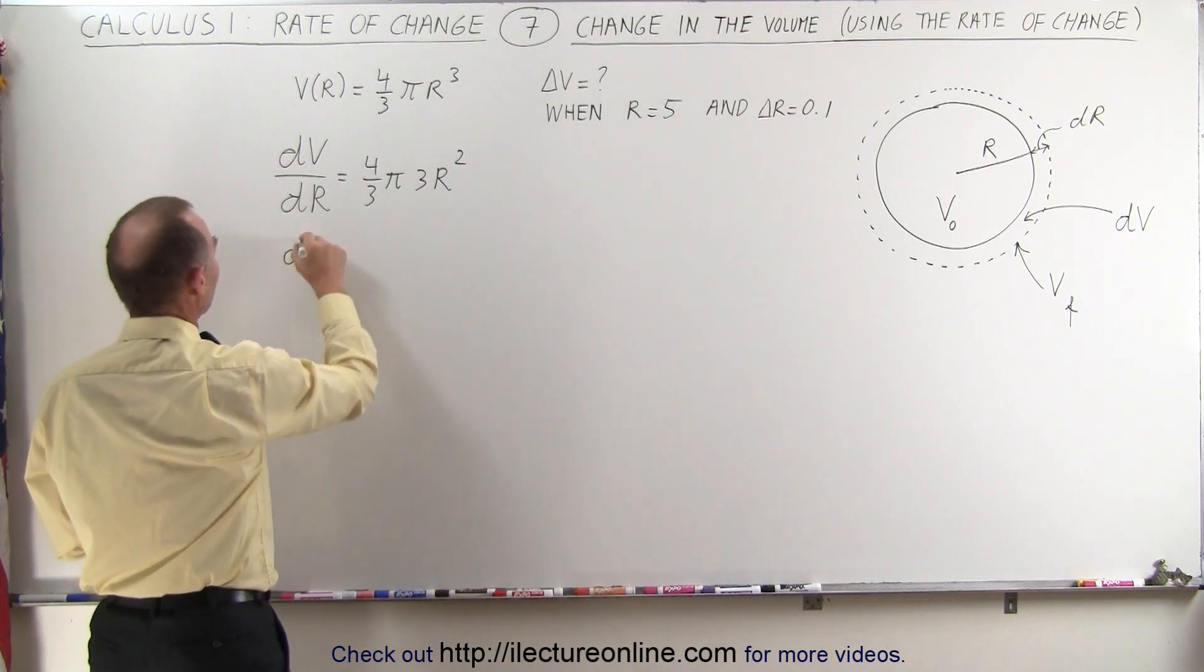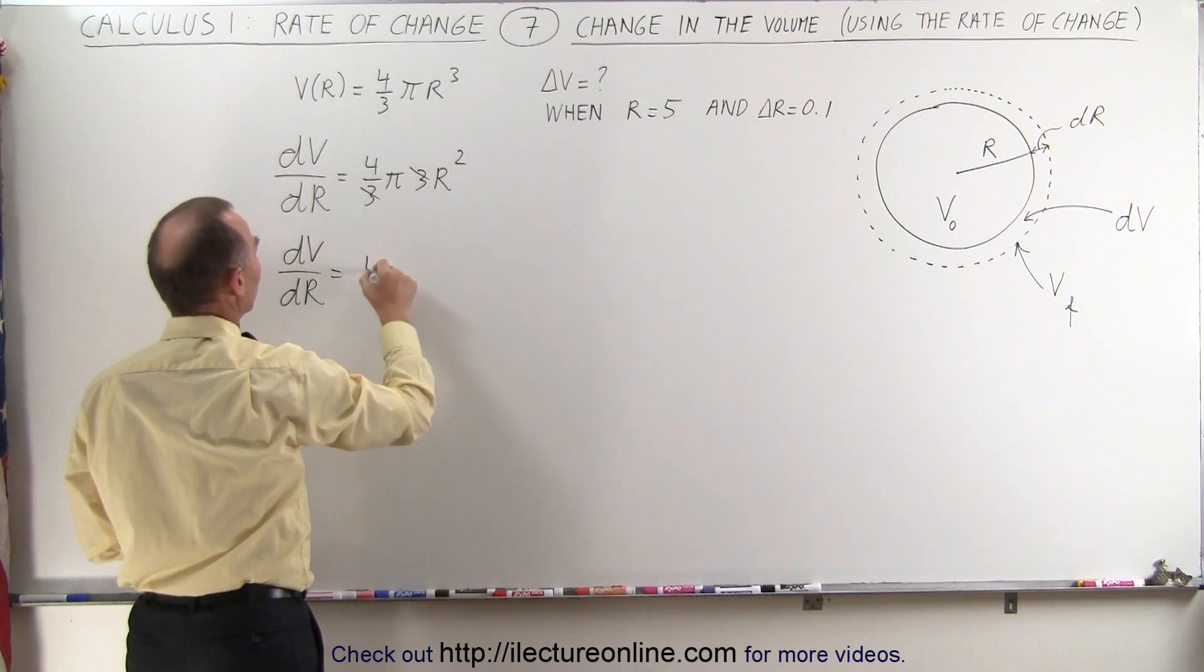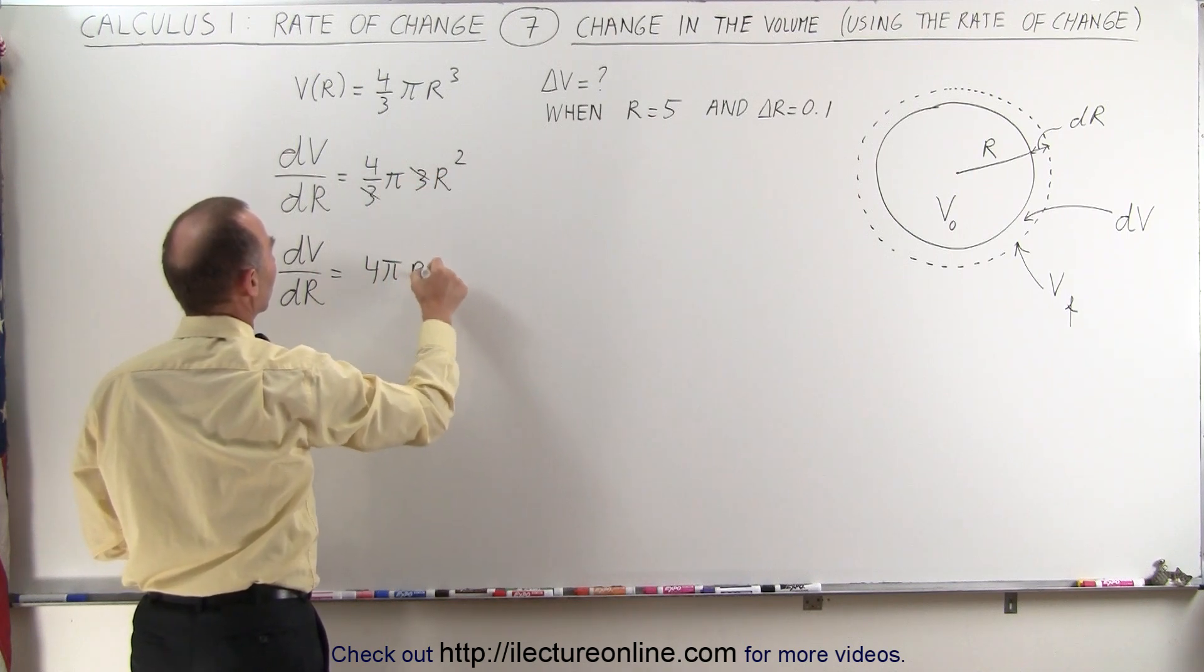When we simplify that, we can say that dV/dr is equal to, because the 3's cancel, it will be 4πr squared.